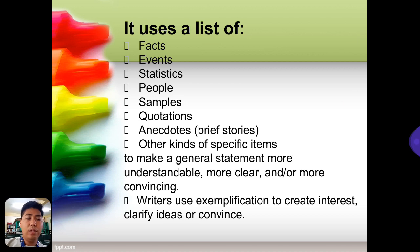To have an effective exemplification paragraph, you have to use facts, events, statistics, people, examples, samples, quotations, anecdotes, or other kinds of specific items to make a general statement more understandable, more clear, and more convincing.